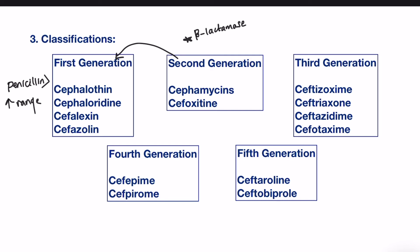The third generation includes ceftizoxime, ceftriaxone, ceftazidime, and cefotaxime. The third generation has greater activity against gram-negative bacteria. This can be explained by the enhanced penetration of these drugs through the LPS, the outer layer of the gram-negative cell wall, which is mostly impermeable to polar drugs.